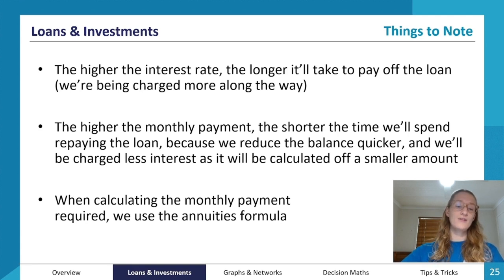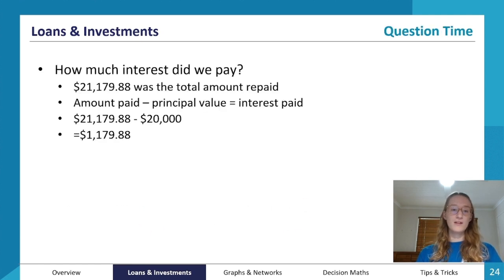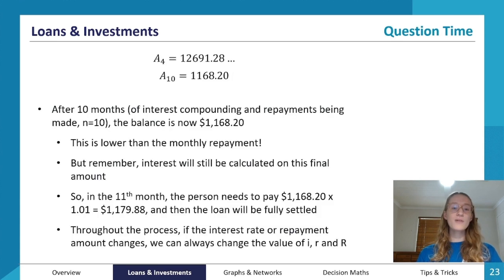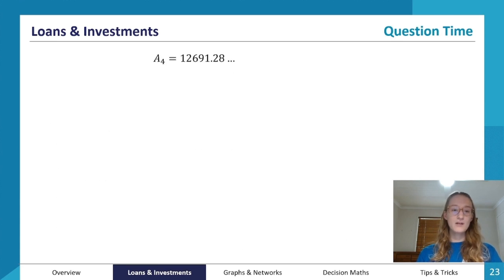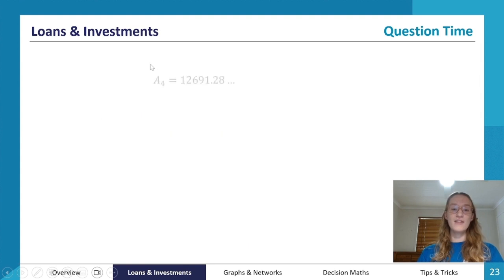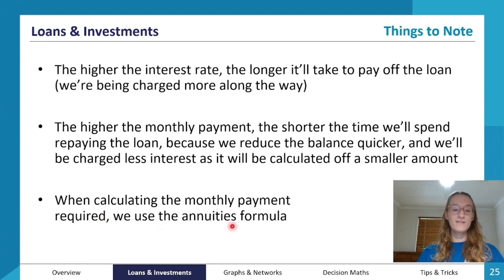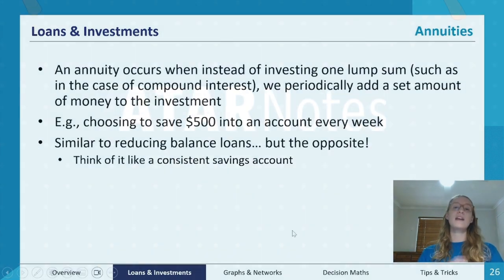When we want to calculate the required monthly repayment amount, we use the annuities formula rather than the recurrence relation formula. The recurrence relation doesn't work when we're trying to solve for the monthly repayment directly, so instead we use the annuities formula, which we'll look at next.